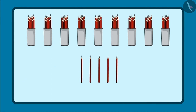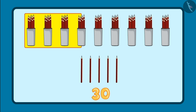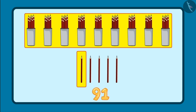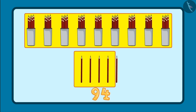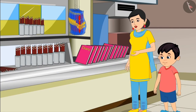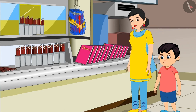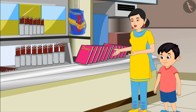So, to give 95 pencils, I have to give 10, 20, 30, 40, 50, 60, 70, 80, 90, and 5 loose pencils. So that is 91, 92, 93, 94, 95. Yes, Choto, you are absolutely right. But if there were only loose pencils, then it would have taken a long time. That's why here the pencils are also kept in bundles of 10.